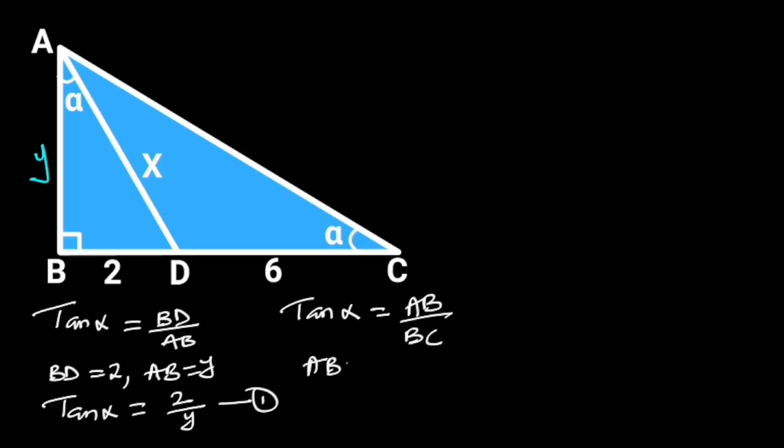AB is equal to Y. BC is equal to 2 plus 6, which is equal to 8. It follows that tan alpha is equal to Y over 8. Let this be equation 2.